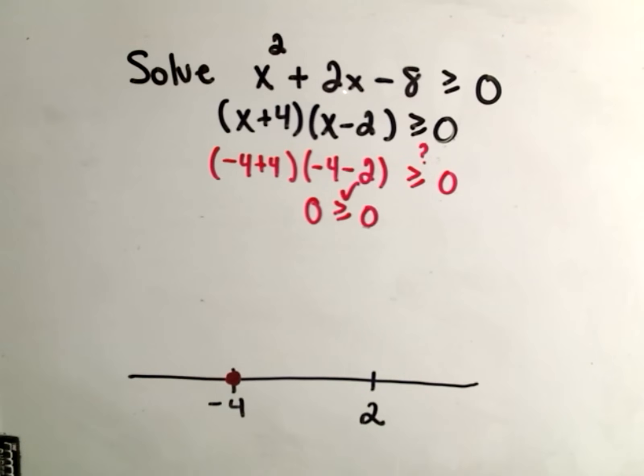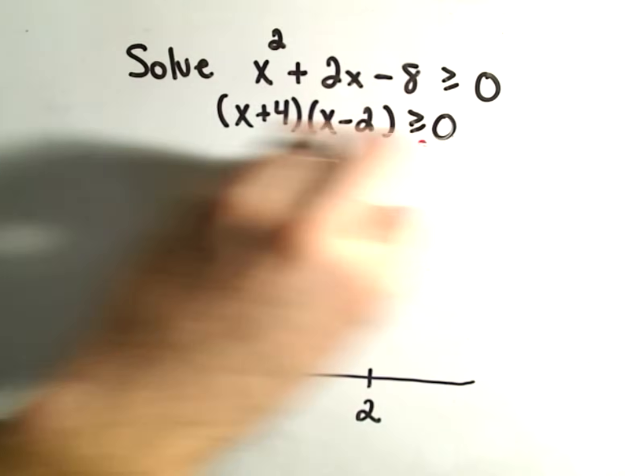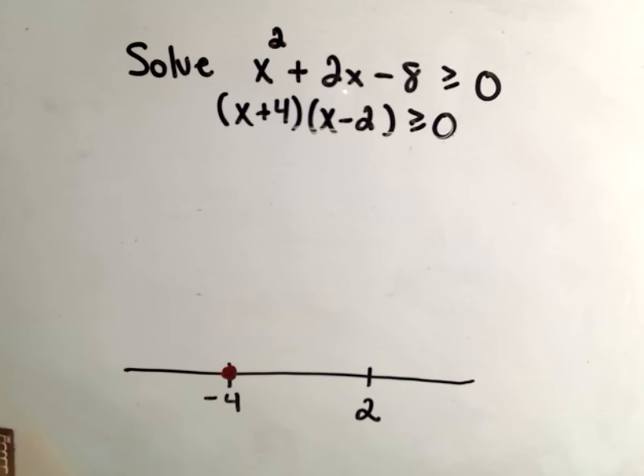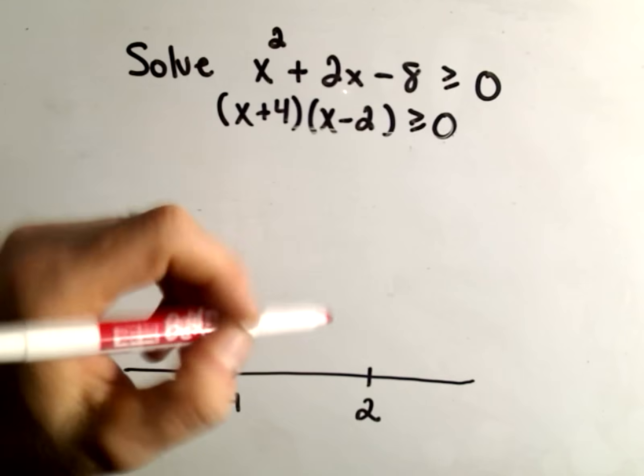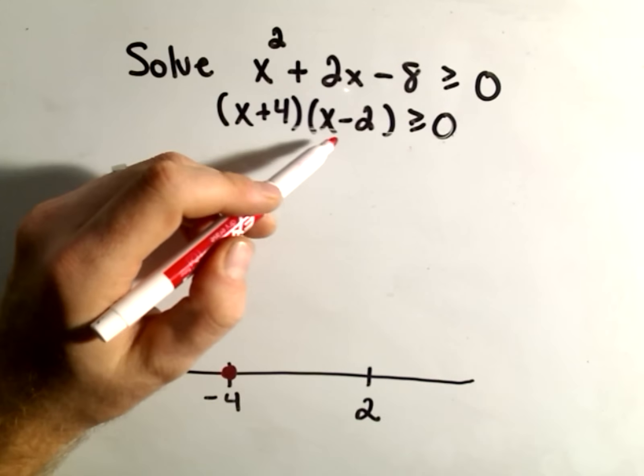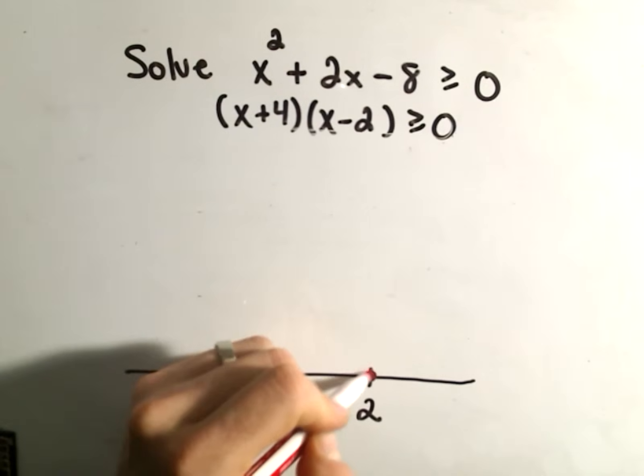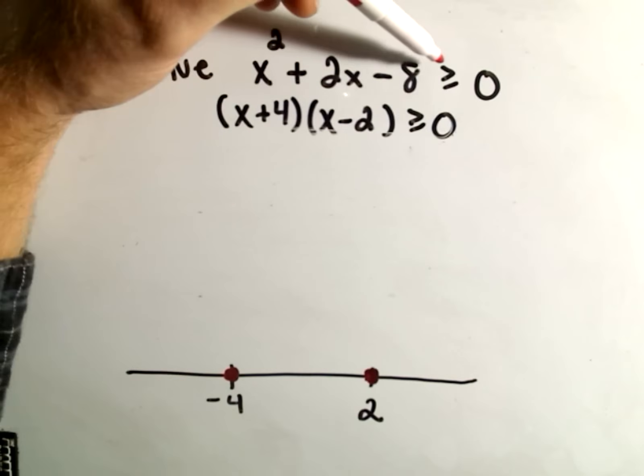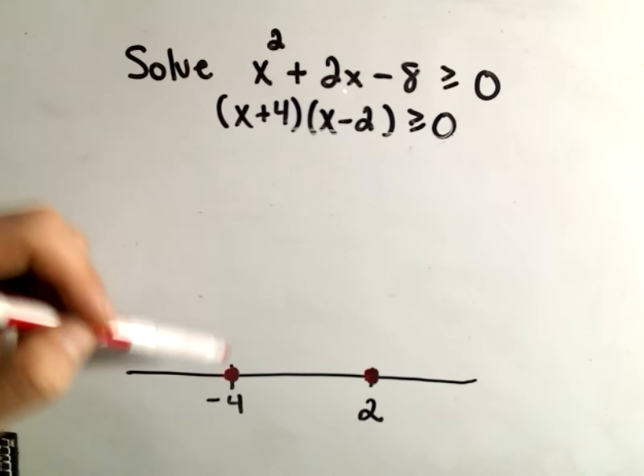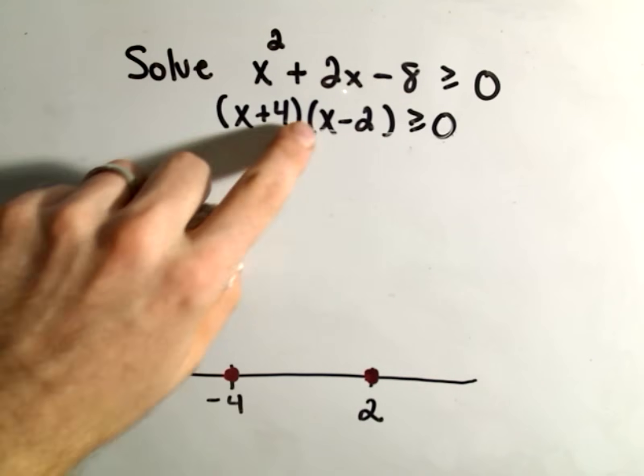And the same thing. If you plug in 2, you know, from our first, what we did at the beginning, we basically said, we figured out what values give you 0. If you plug 2 in, we're going to get 0 out. And again, 0 is greater than or equal to 0. So if your inequality is greater than, equal to, or less than, equal to, the solutions will always work. Because those are the things, in particular, that give you 0.